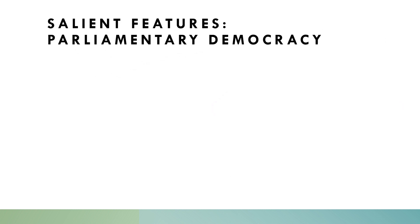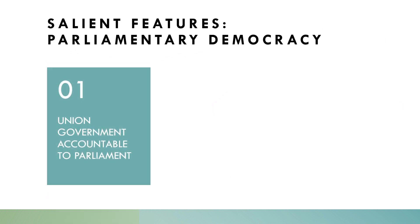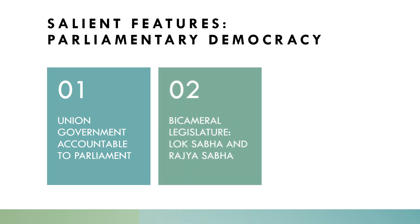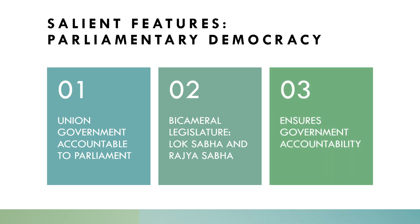The second feature is parliamentary democracy. The union government is responsible to the parliament, a bicameral legislature consisting of the Lok Sabha, i.e. the lower house, and Rajya Sabha, the upper house. This ensures that the government remains accountable to the people's representatives.